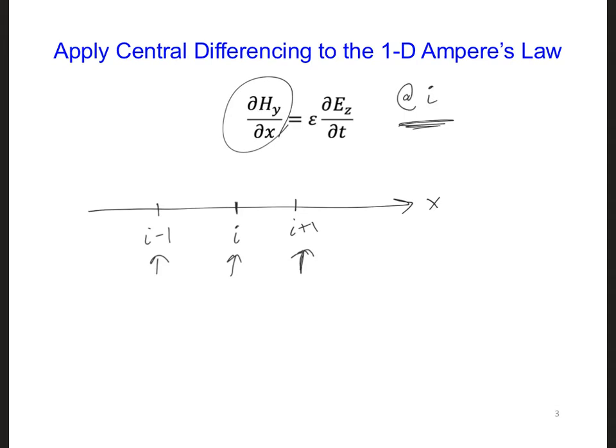So when we sample the Hy's both to the left and the right of position i, we should use Hy's that are halfway between i and i plus 1, and halfway between i and i minus 1.